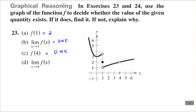Part D says: find the limit of the function as x approaches 4. As x approaches 4 from the right, y approaches 2. As x approaches 4 from the left, using that same line, the value of y still approaches 2. So that limit would be 2.